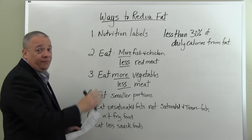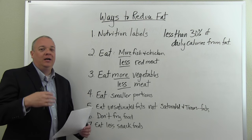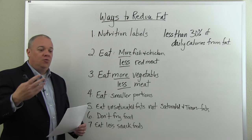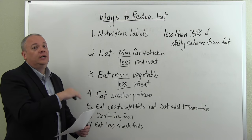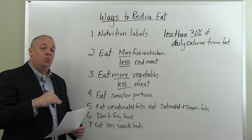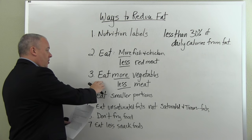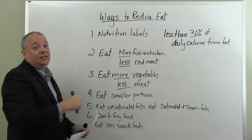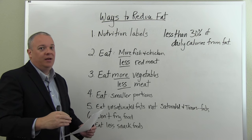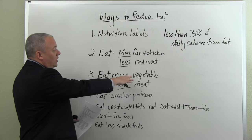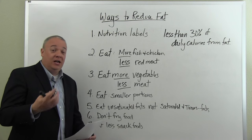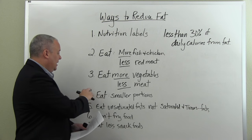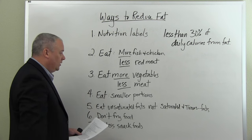Number two: encourage them to eat more fish and chicken and less red meat. Make a swap — instead of a hamburger, have the chicken sandwich; instead of steak, have the fish. Number three: encourage them to eat more vegetables and less meat. Increase vegetables, decrease the amount of meat eaten per day. A salad without chicken and not too much dressing reduces fat and brings in healthier calories.